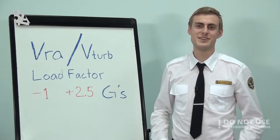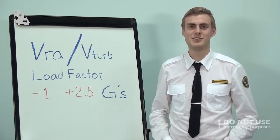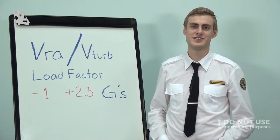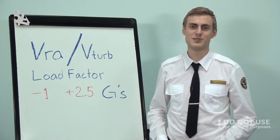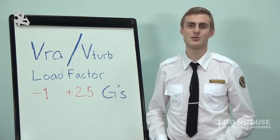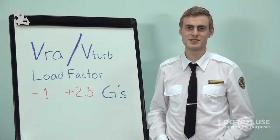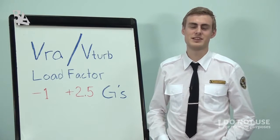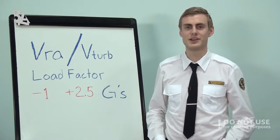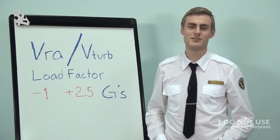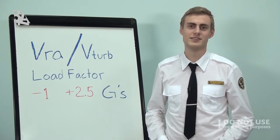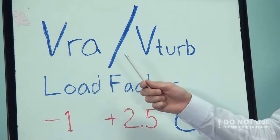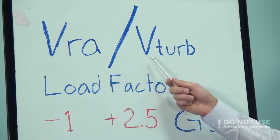There are different kinds of turbulence. Cumulonimbus clouds can be very turbulent even in the vicinity. There is also something called CAT, or clear air turbulence. If severe turbulence is encountered or expected, we have procedures to follow and a safe speed called VRA, or sometimes V-turbulence.